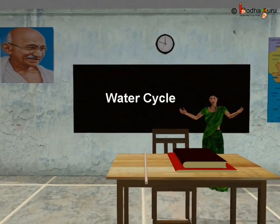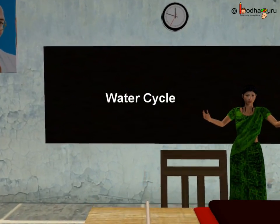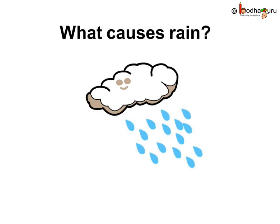Good morning children. Have you ever wondered how does it rain or what causes rain? Before this, first let us understand the two processes: evaporation and condensation.